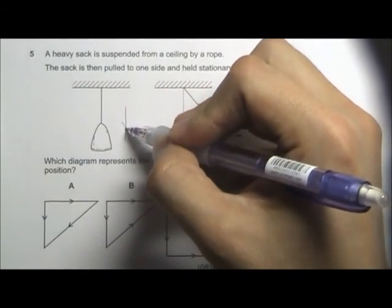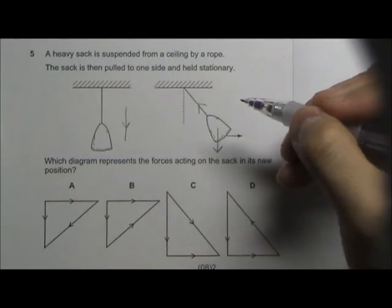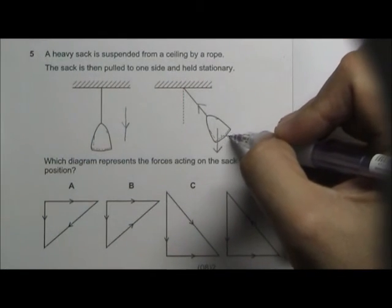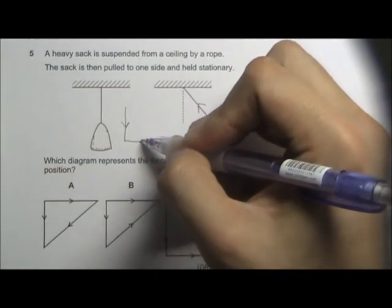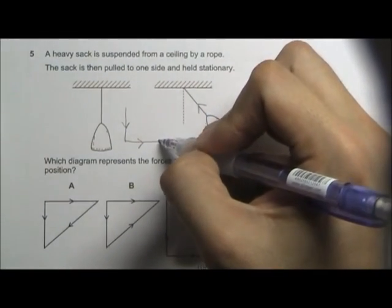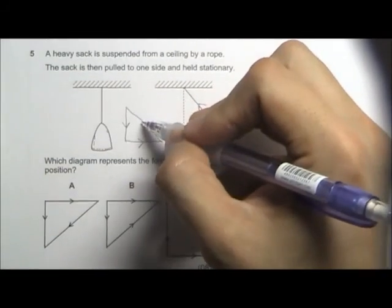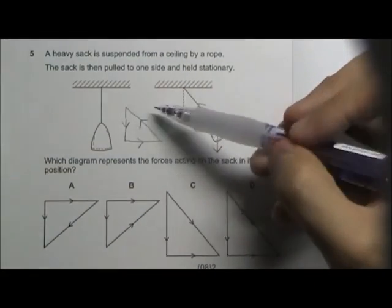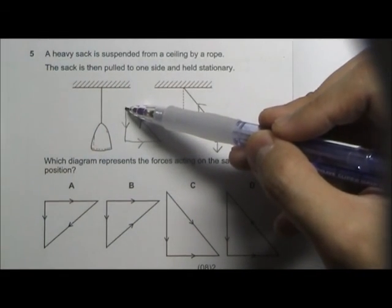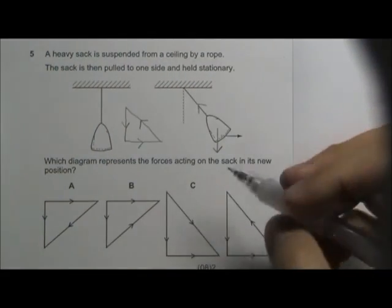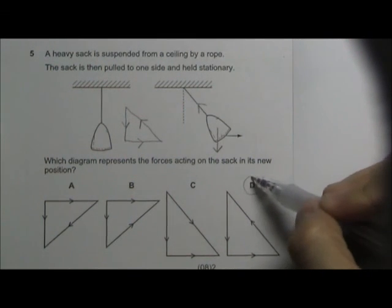Let's start with the downward force. Next, it will be the horizontal force going to the right. And we have the tension going back this way. And we see that all the forces, when you line up properly, it goes back to the original point. So the answer should be D.